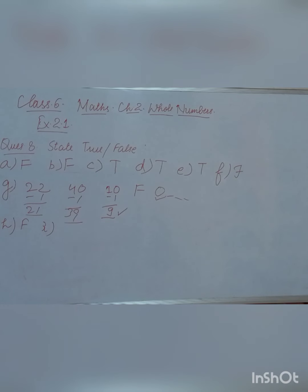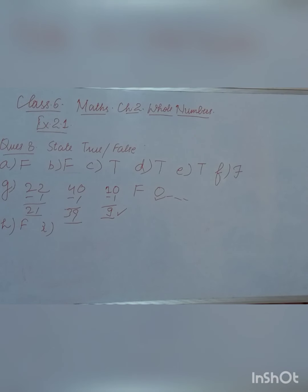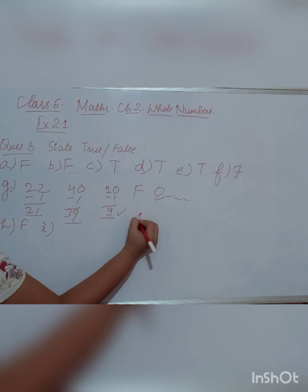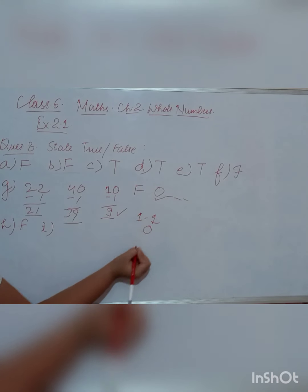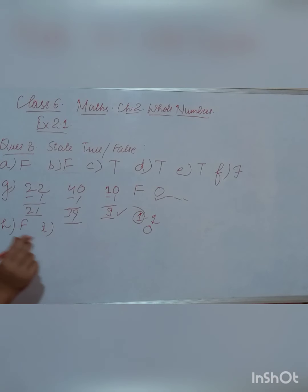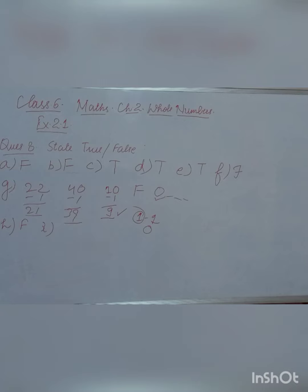The I part says: 'The natural number 1 has no predecessor.' Natural numbers start from 1. If we do 1 minus 1 we get 0, but 0 is a whole number, not a natural number. So within natural numbers, 1 has no predecessor — but wait, it does have 0 as a predecessor in whole numbers. Let me reconsider this.